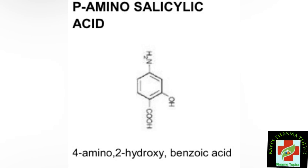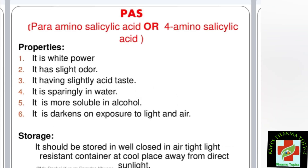Next is para-aminosalicylic acid. Its IUPAC name is 4-amino-2-hydroxybenzoic acid. Para-aminosalicylic acid is sparingly soluble in water, and it is more soluble in alcohol.